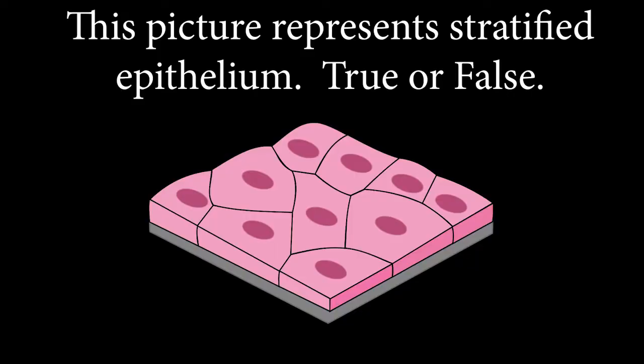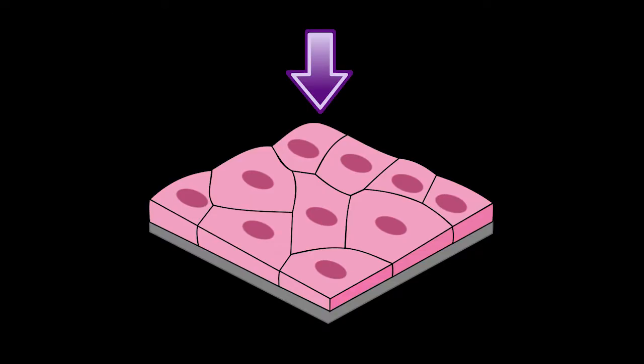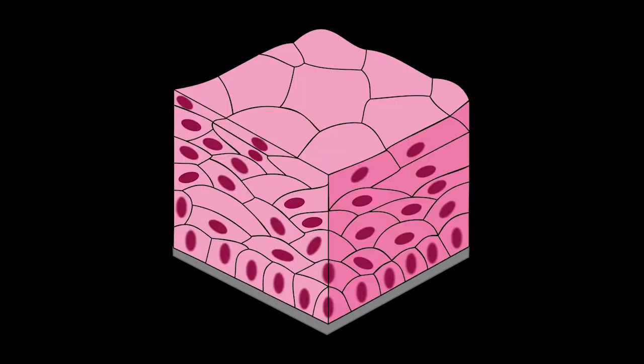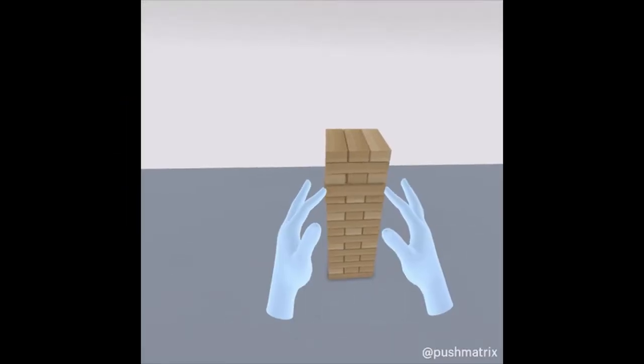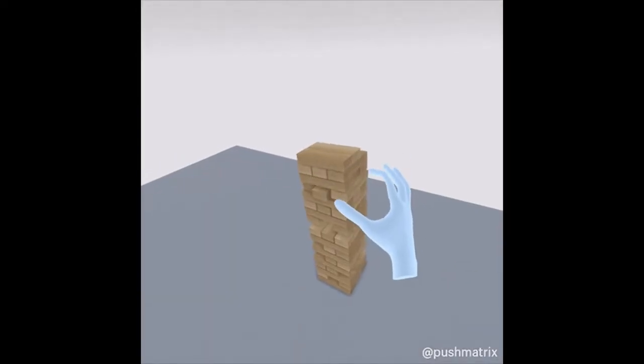This picture represents stratified epithelium. True or false? False — if you said false, that is correct. Notice that there is only one layer of cells, and we learned that stratified means multiple. Remember, we build a tower by strategically placing blocks on top of each other.